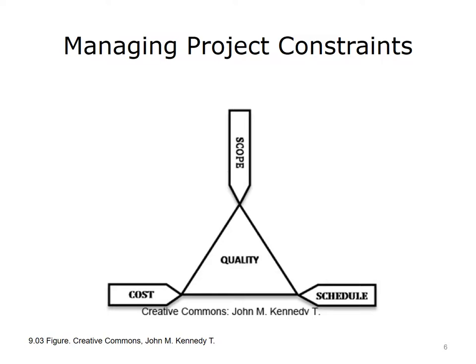This project management triangle, also known as the triple constraint, illustrates how the relationship between the three project constraints of scope, schedule, and budget work to ensure the success of a project. One side of the triangle cannot be altered without affecting the others, so if there is a change to one of the project constraints, such as the project schedule, you must evaluate potential impacts to the other project constraints. Fortunately, there are a number of tools available to help you control changes to these elements.